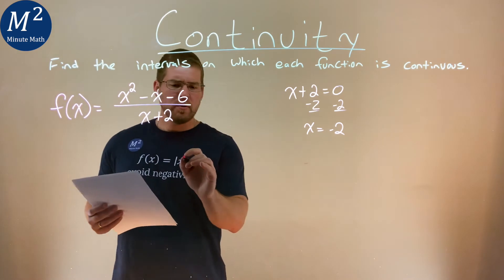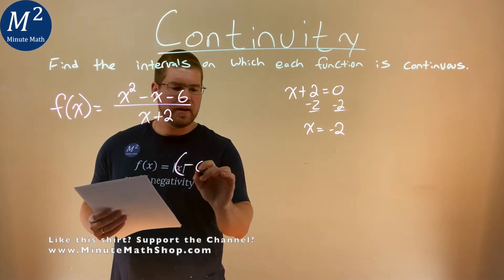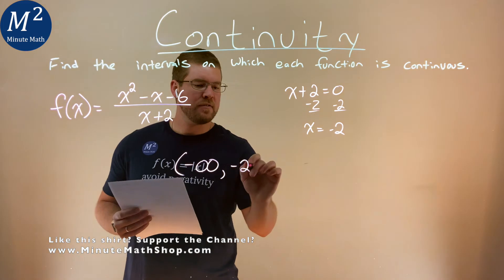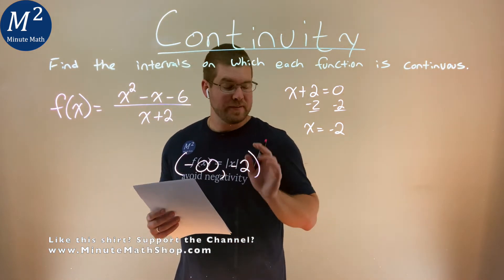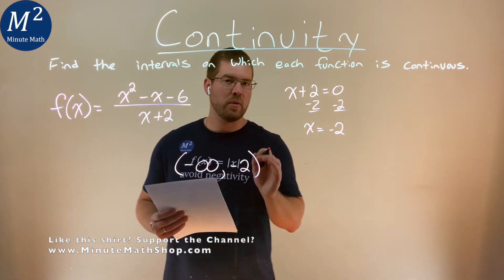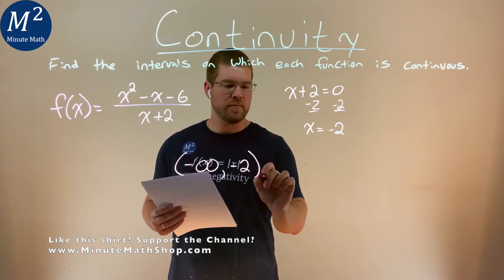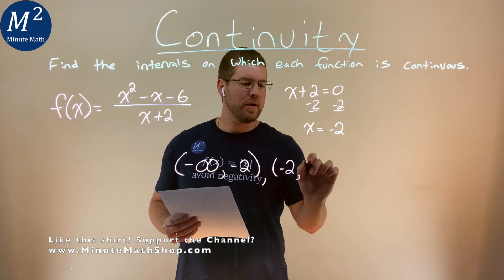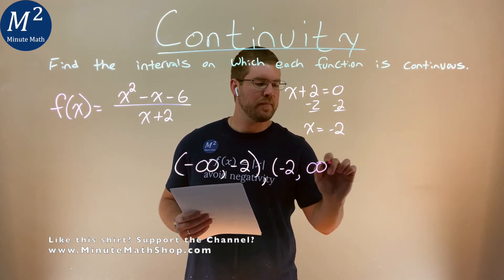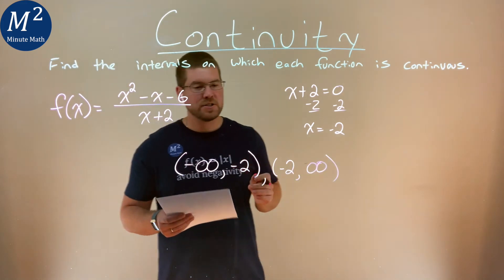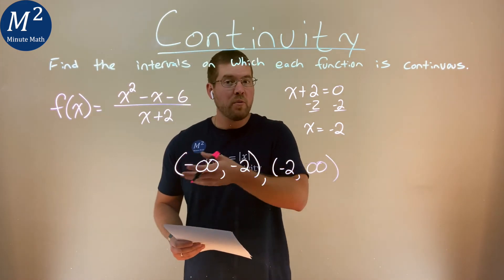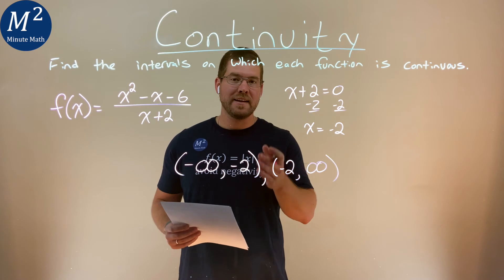So we would say that this function is continuous from negative infinity all the way to that negative 2. We'll put a parenthesis there at negative 2 showing not continuous there at negative 2. Then from negative 2 to positive infinity. And so again, our function is continuous for all real numbers except for at negative 2.